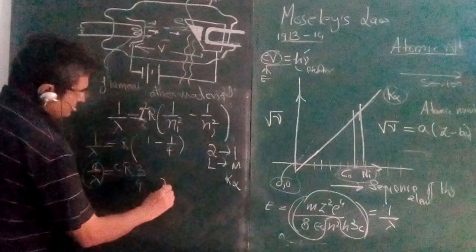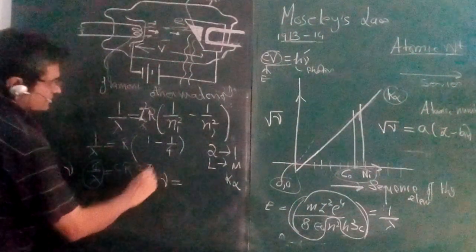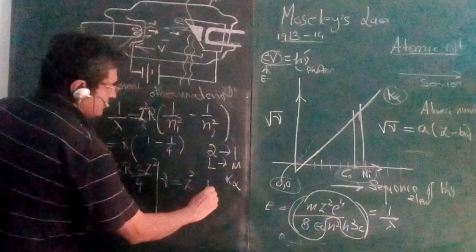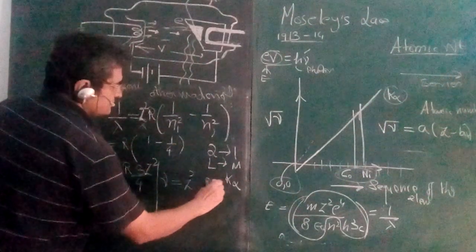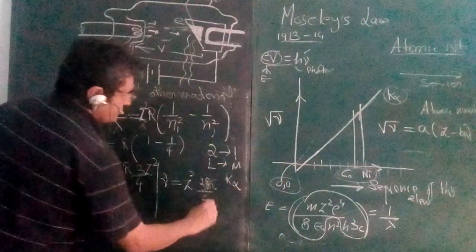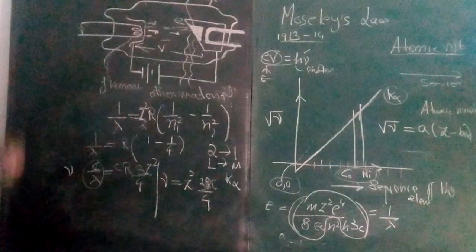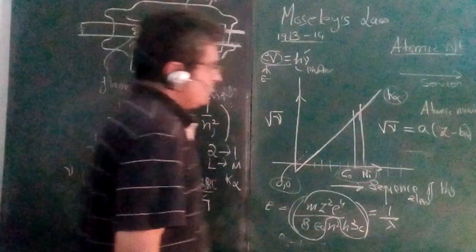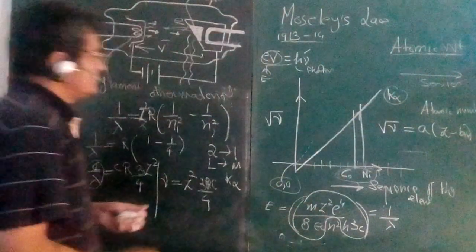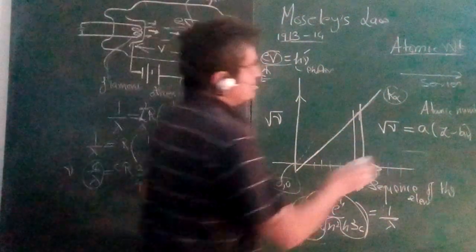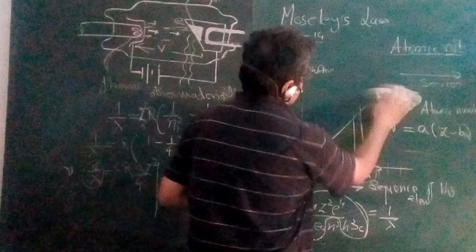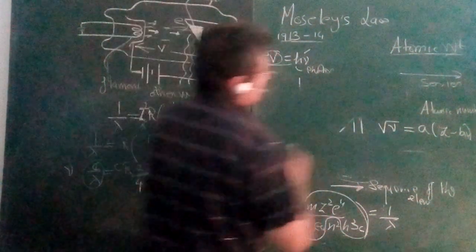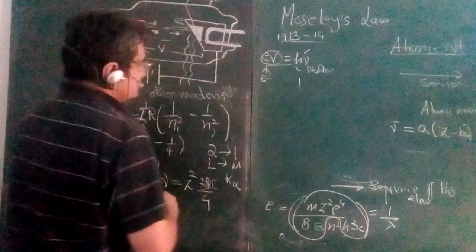Now coming back to this relationship, I get μ is equal to z²Rc(3/4). And now another thing you have to take into account: when an electron is jumping, is coming down from the L shell to K shell, you have to take into account the screening effect.